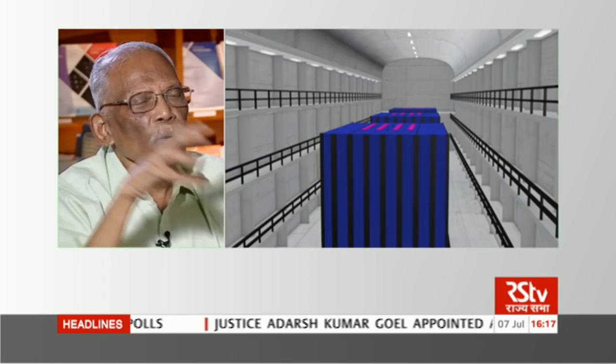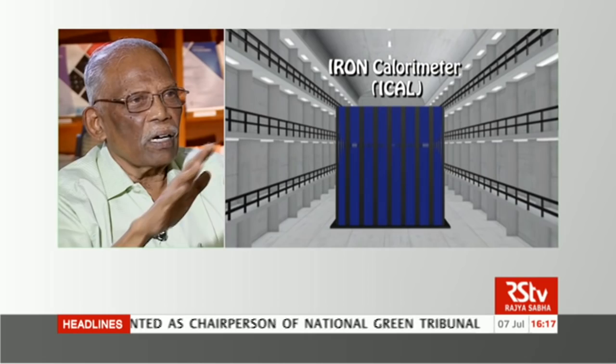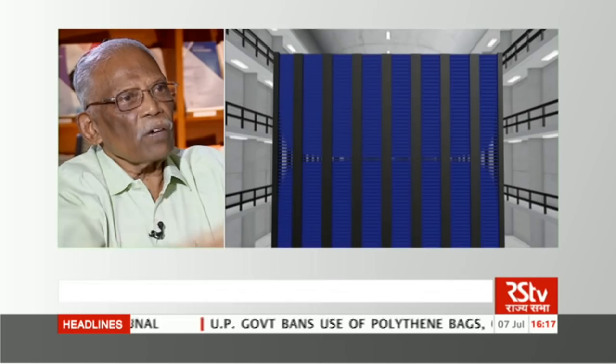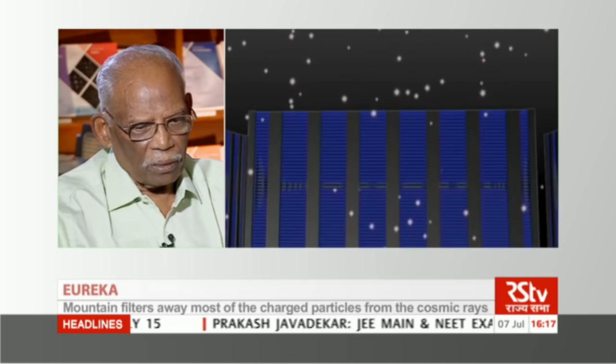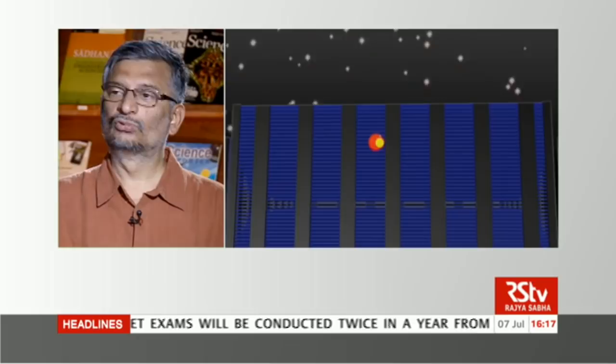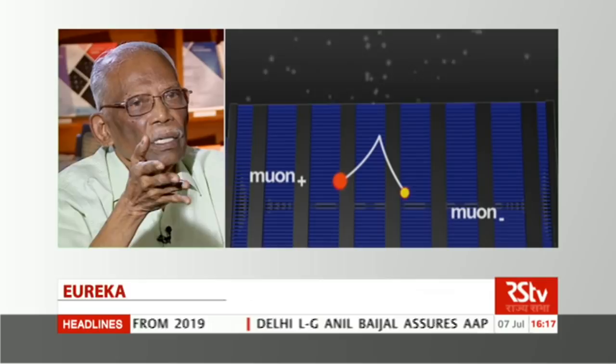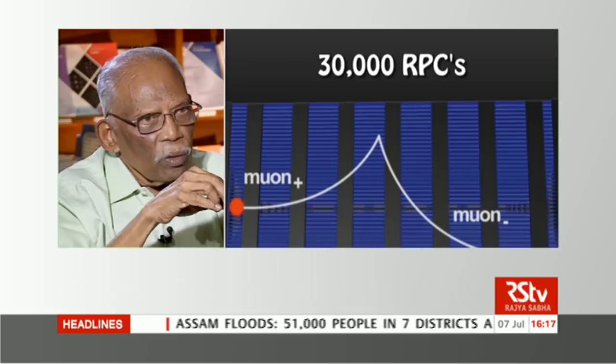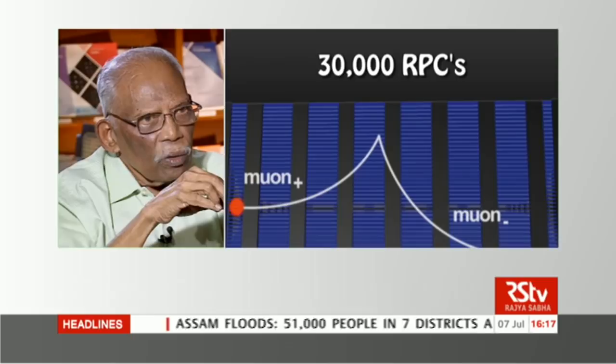A huge detector — 50,000 tons of basically iron — iron slabs alternating with sensitive detectors, 140 layers of them, at dimensions of 48 metres length, 16 metres breadth, and about 16 metres height. Why iron? One reason is it will be an electromagnet — it will be magnetized. Once there is a magnetic field, neutrinos and antineutrinos can be distinguished: neutrinos produce a muon with one charge, antineutrinos produce the opposite charge muon. They will curve in opposite directions in the magnetic field.